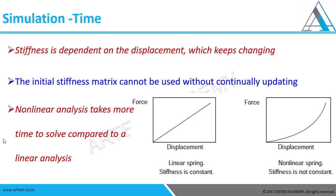As it is complex, the simulation time is higher in non-linear analysis. Unlike linear analysis, stiffness depends on the displacements, which keeps changing. That means for every part of the simulation, stiffness will be updated to capture the non-linear effect. That's why it takes more time to solve compared to linear analysis.